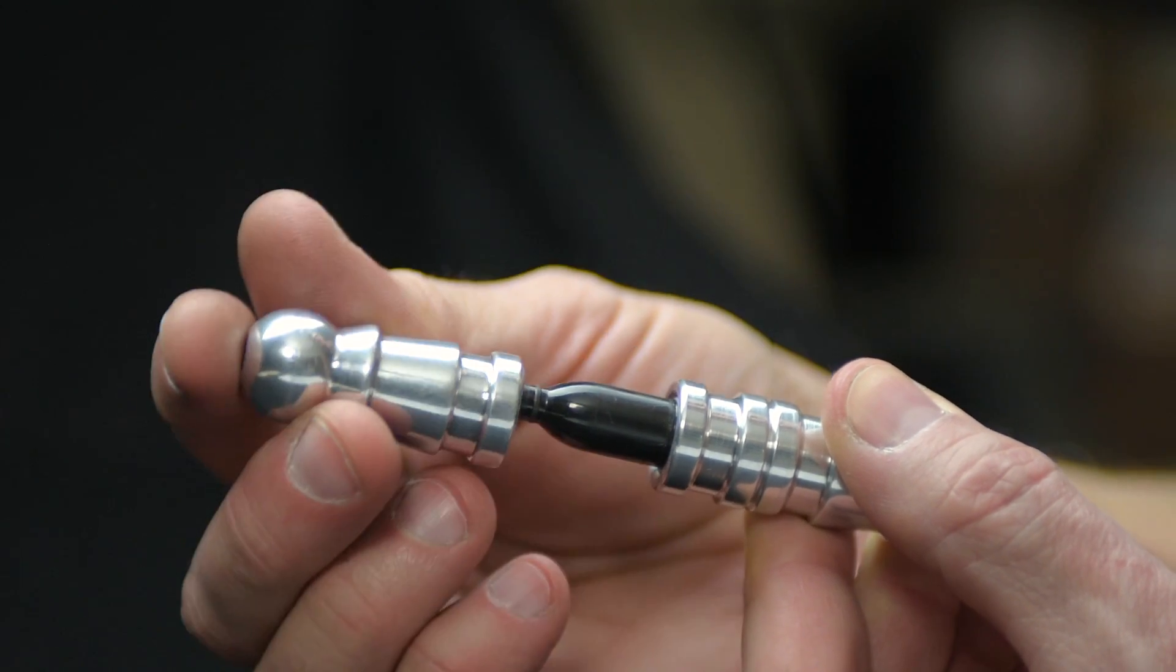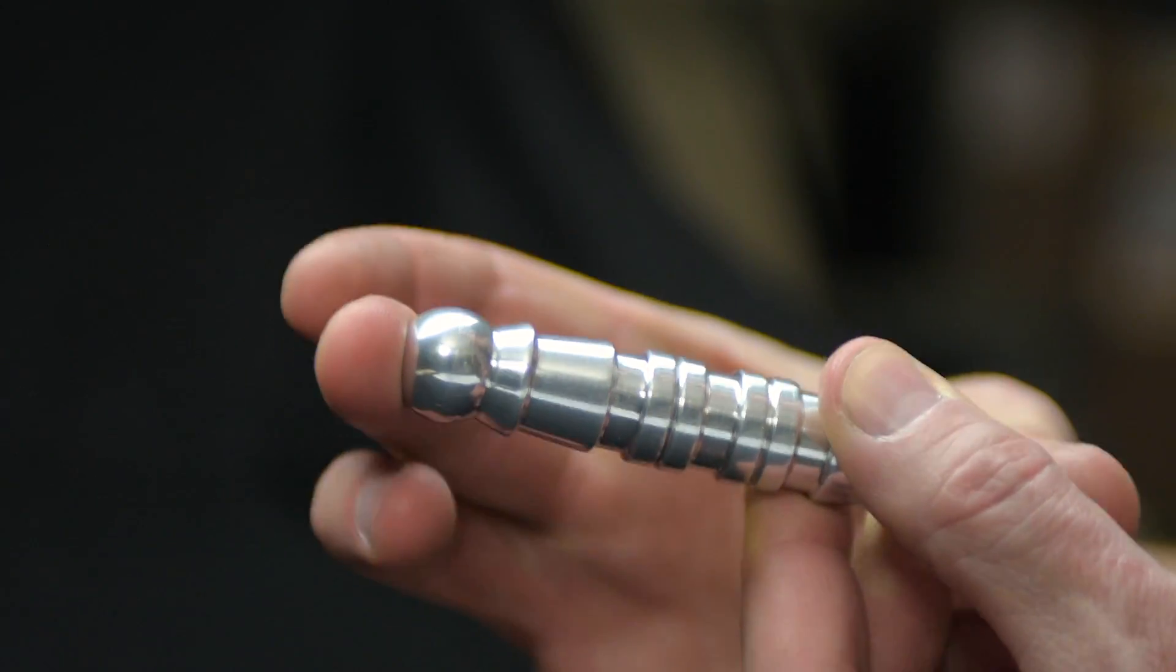So you may be wondering what this is. Well, it's a mini Sharpie with a custom aluminum casing. I'd like to show you some of the stuff that I learned during this project, so here we go.